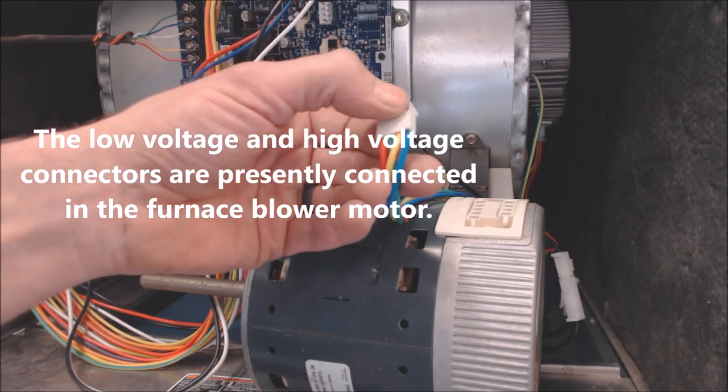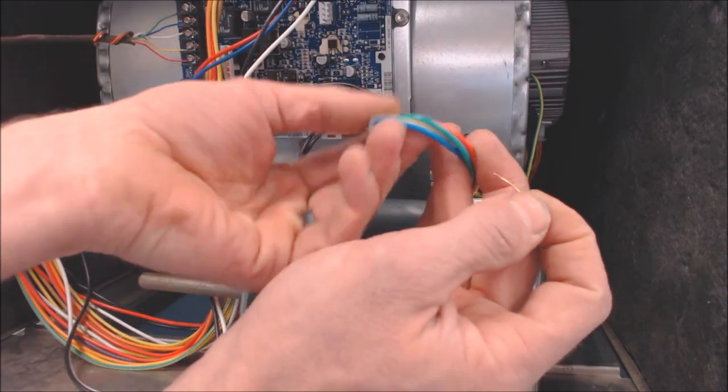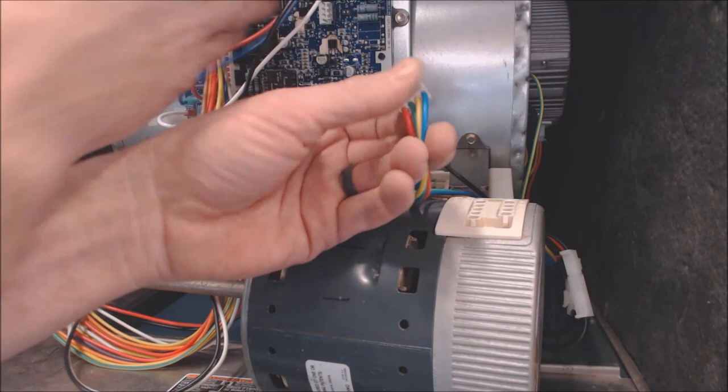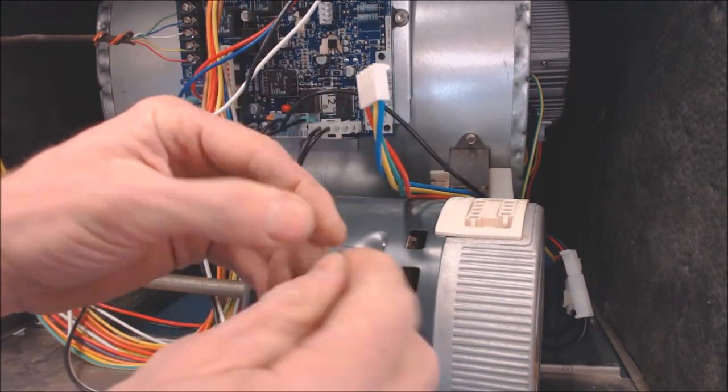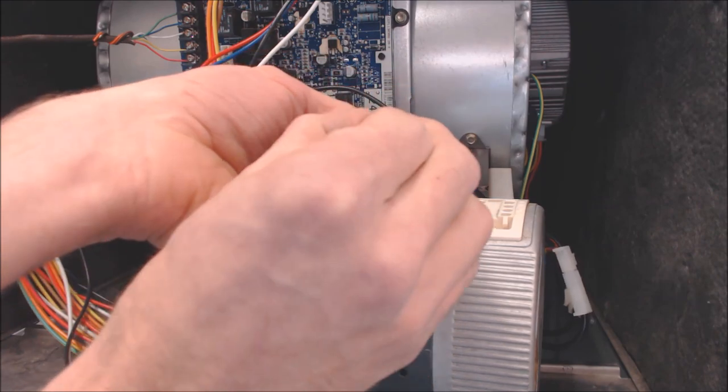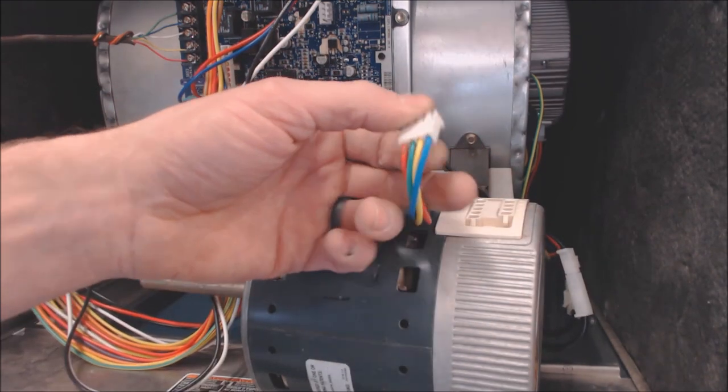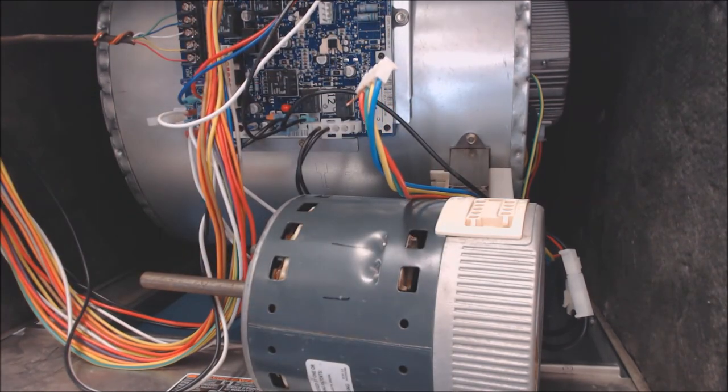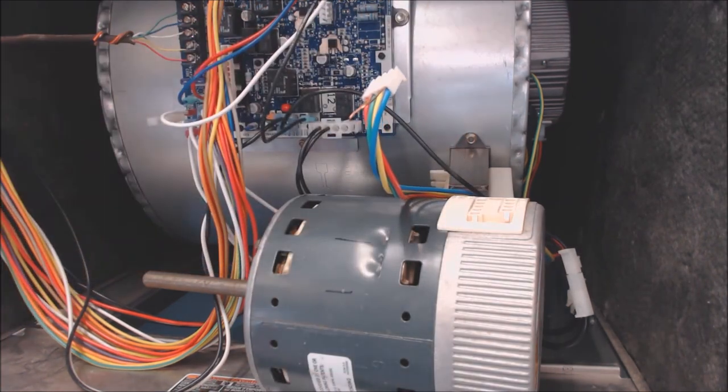You're going to now strip some 18 gauge wire. And you are going to put that into the back of the electrical connector. Make sure that you're never putting any wires up in the front right here. Make sure that you're just putting these wires into the back of the electrical connection. So right there. And right here.